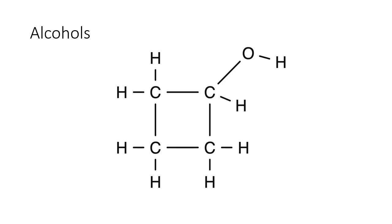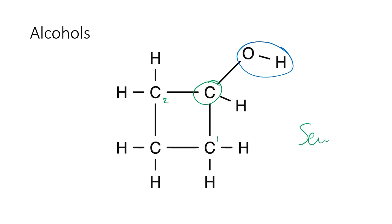Last one — here's your alcohol group. You'll notice something special about this alcohol: it's a cyclic alcohol. This is the carbon it's bonded to, and it's bonded to one, two other carbons — bonded directly to those two other carbons, not via the others around the ring. It's just how many they're bonded to directly. So this is a secondary alcohol.